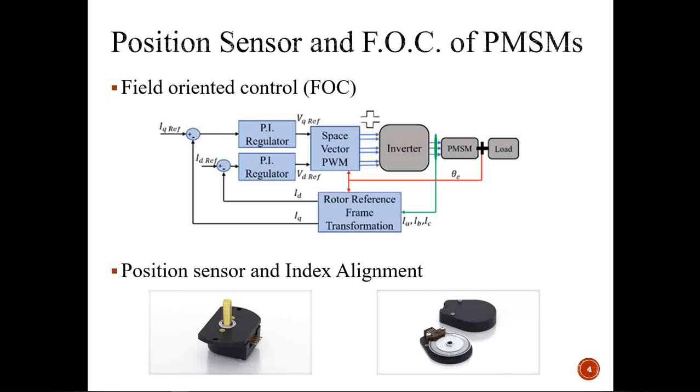For permanent magnet synchronous machines, field oriented control is one of the popular methods of control regardless of whether you control torque, speed, or position. In order to achieve optimal field orientation, you need to know the rotor position. With your rotor having permanent magnets, we need to know the alignment of the rotor so that the stator flux vector can be placed in an optimal position.